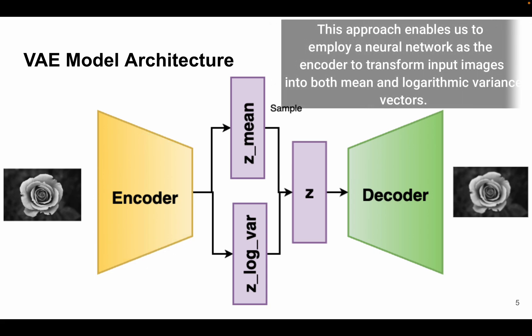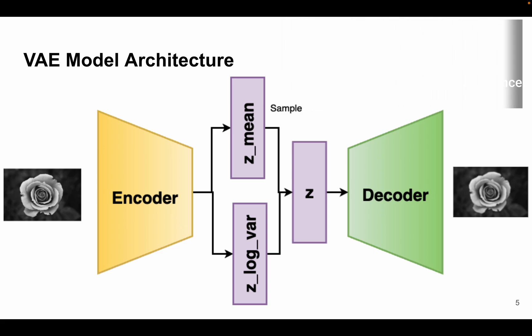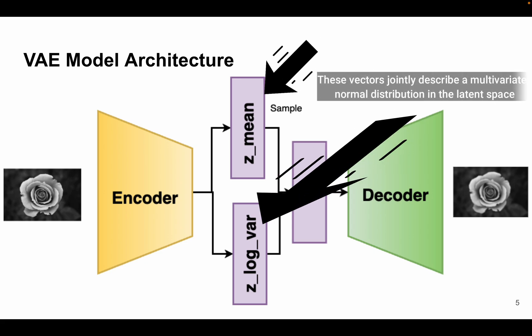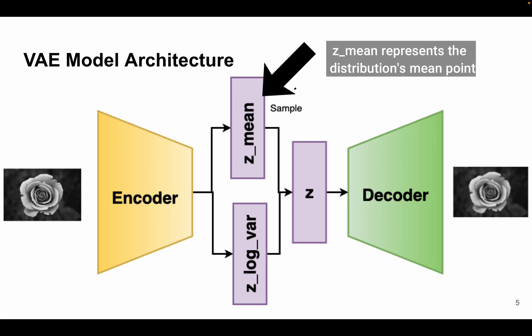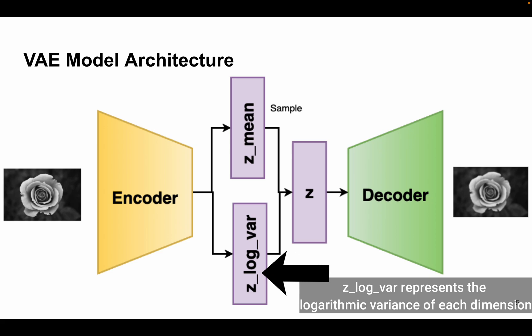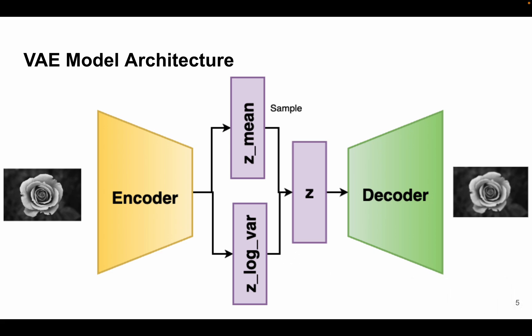Now this approach enables us to employ a neural network as encoder to transform input images into both mean and logarithmic variance vectors. So in brief, the encoder processes the input images to produce two vectors, namely z_mean and z_log_var. Now these vectors jointly describe a multivariate normal distribution in the latent space, where z_mean represents the distribution's mean point and z_log_var represents the logarithmic variance of each dimension.